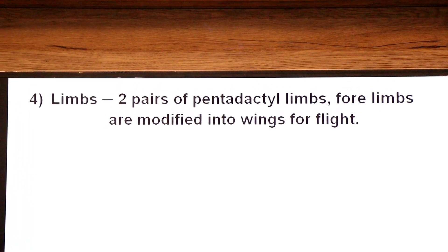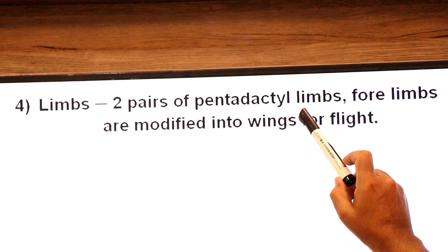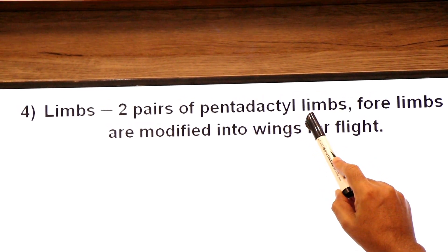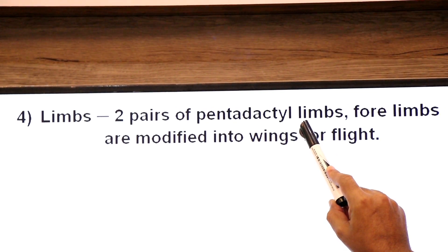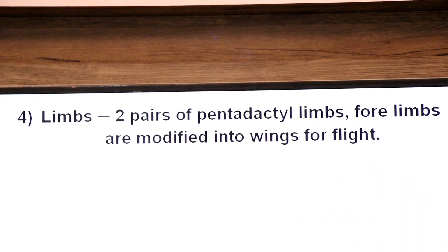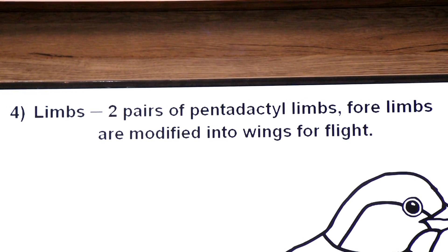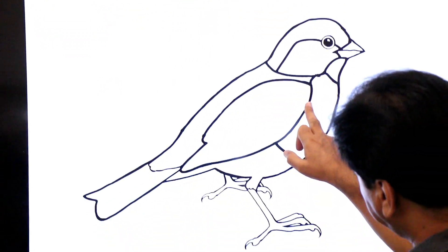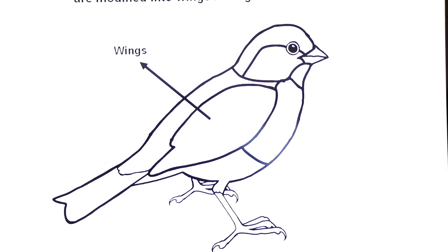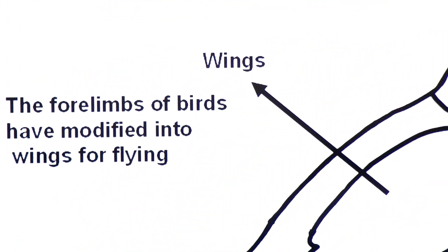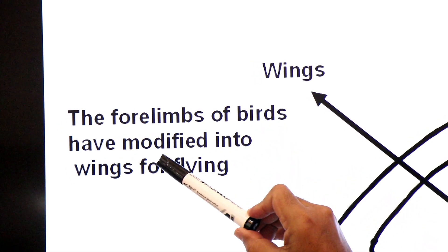Dear students, birds have two pairs of pentadactyl limbs — limbs that end in five digits. The forelimbs are modified into wings for the purpose of flight. You can see these are the wings of the bird; the four limbs have been modified into wings for flying.